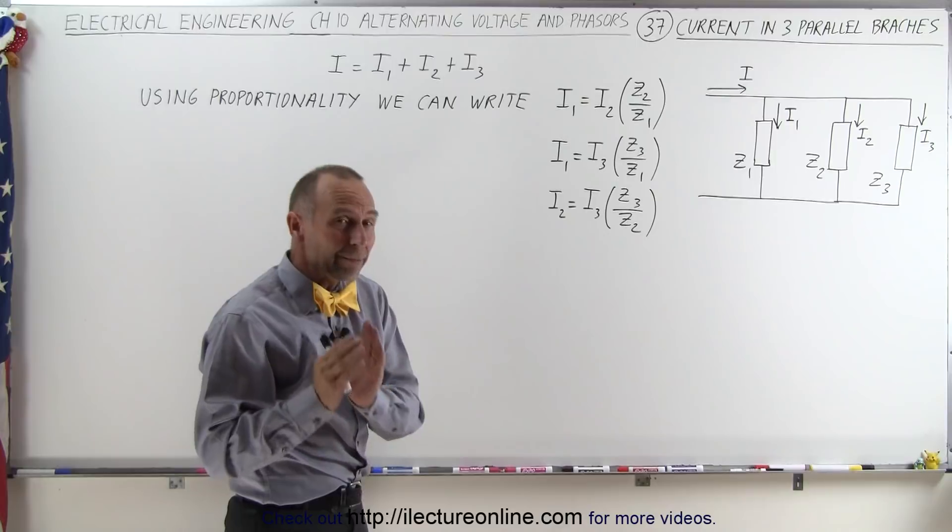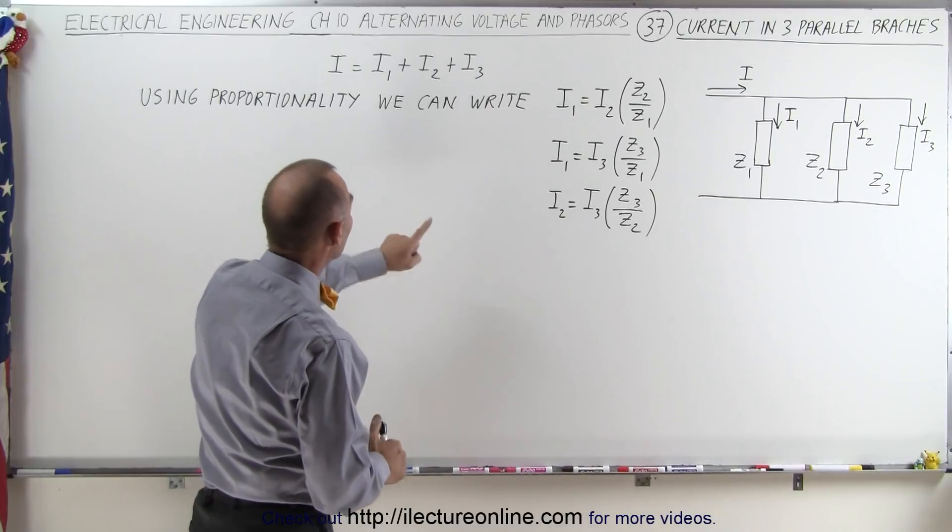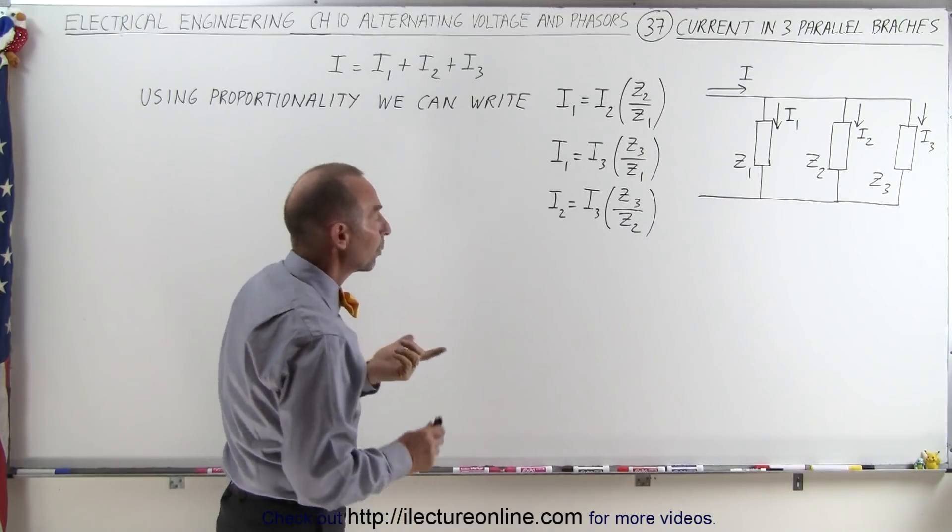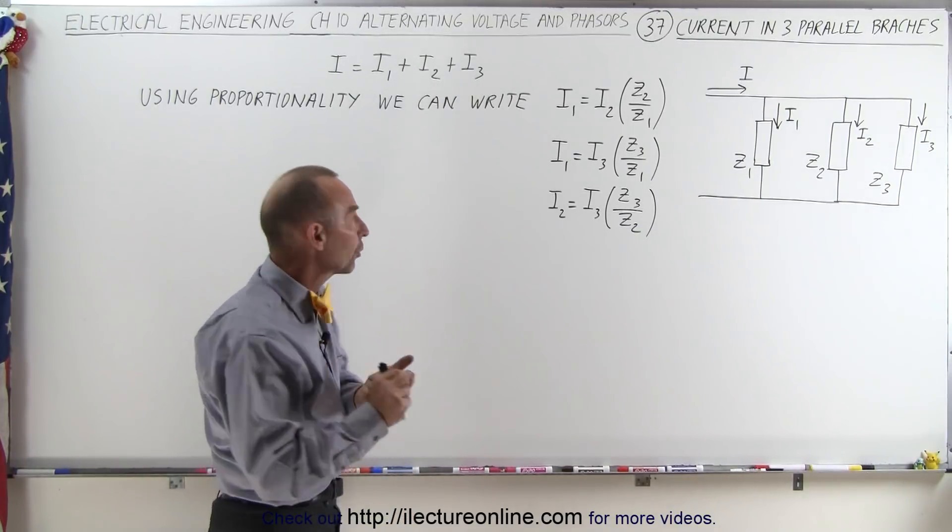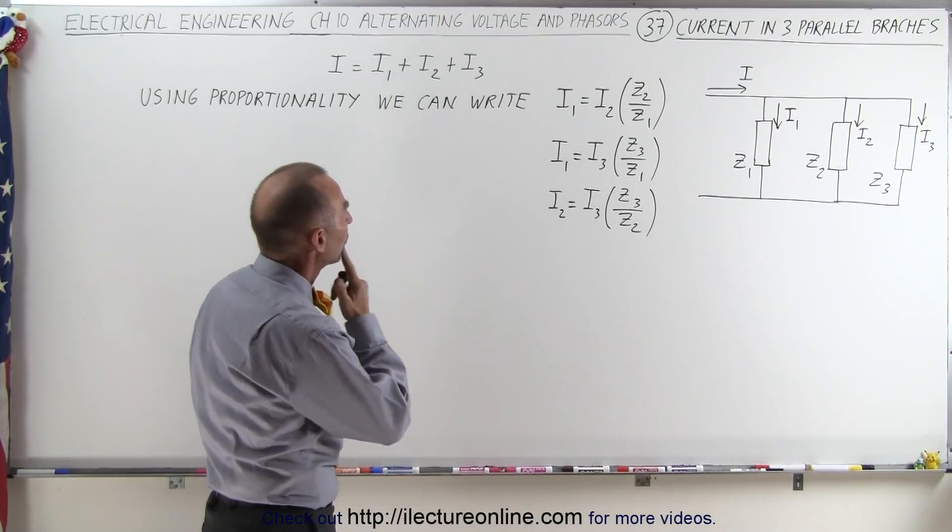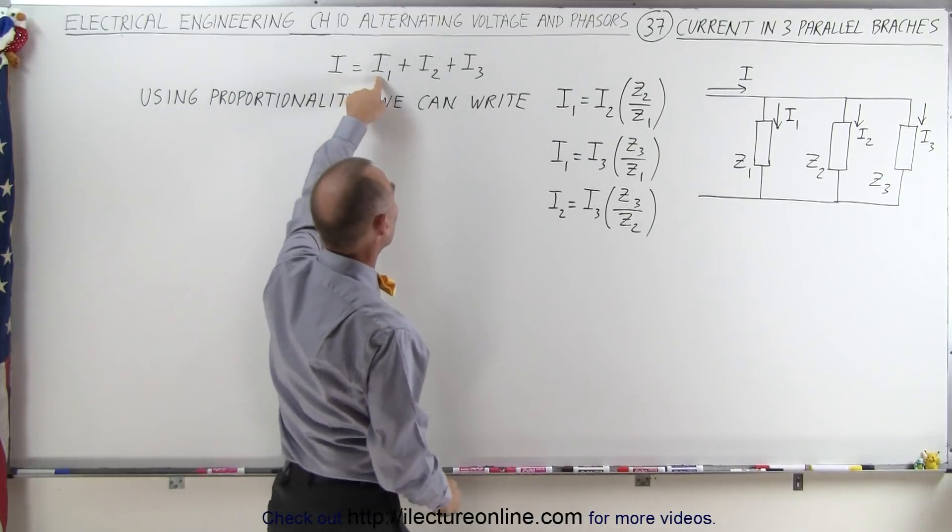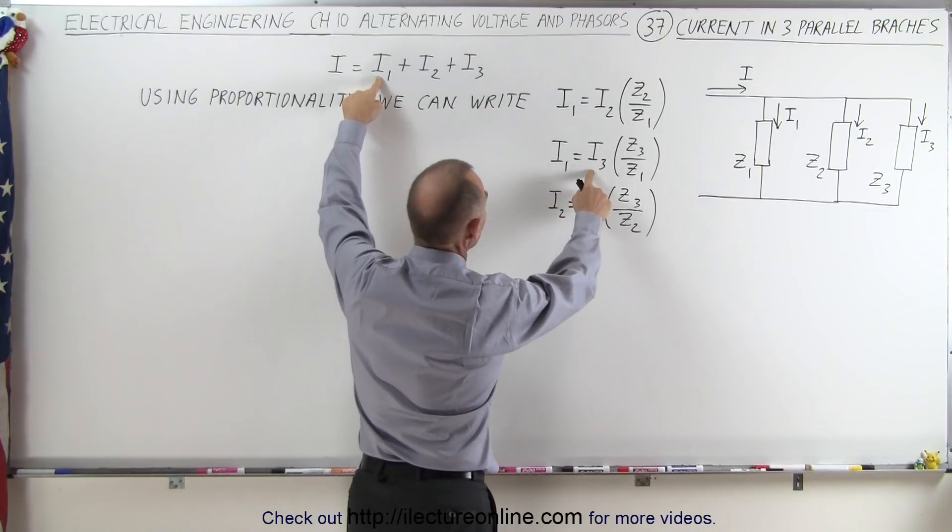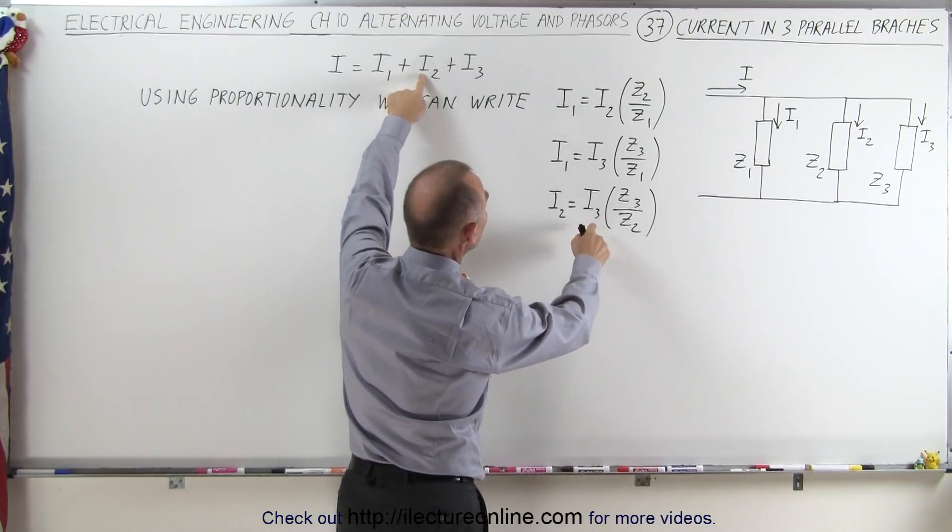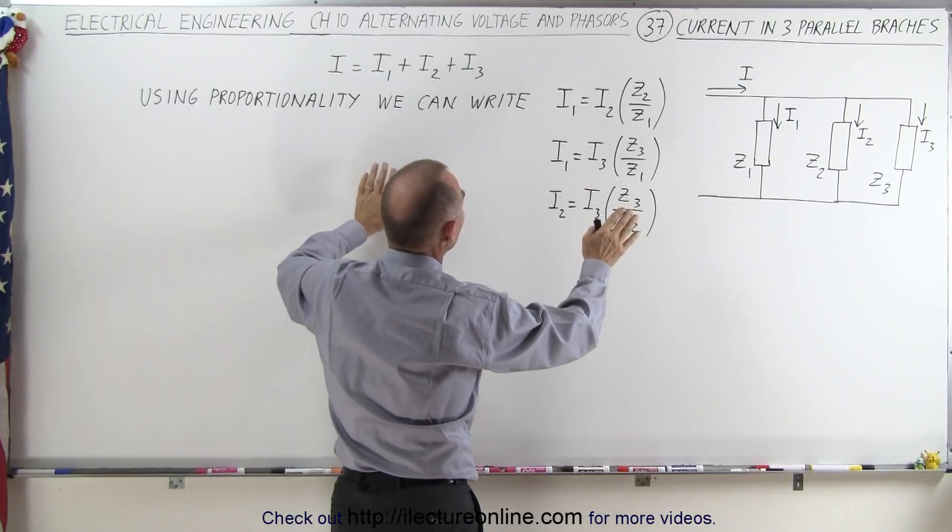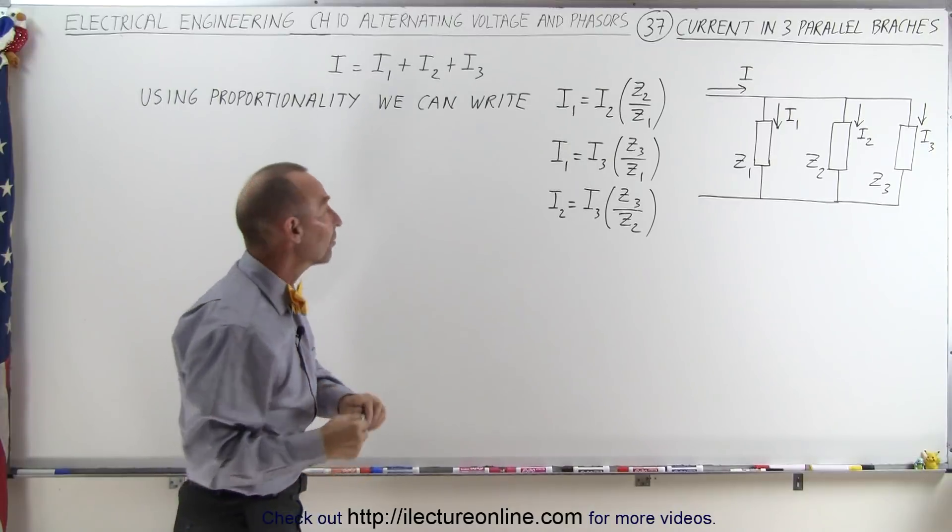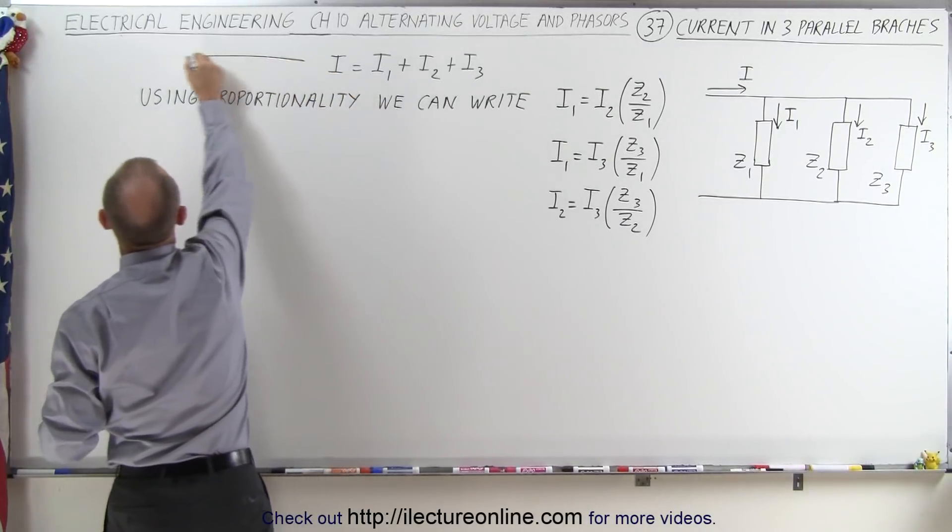The way we want to employ this technique is we want to substitute in our original equation everything but one of the currents. We want to end up with just one of the currents in terms of the total current and the impedances. So what I want to do is replace I1 in terms of I3, and replace I2 in terms of I3. When I do that, I get rid of I1, I get rid of I2, and I only have I3 in the equation. And that's what I'm trying to get to.